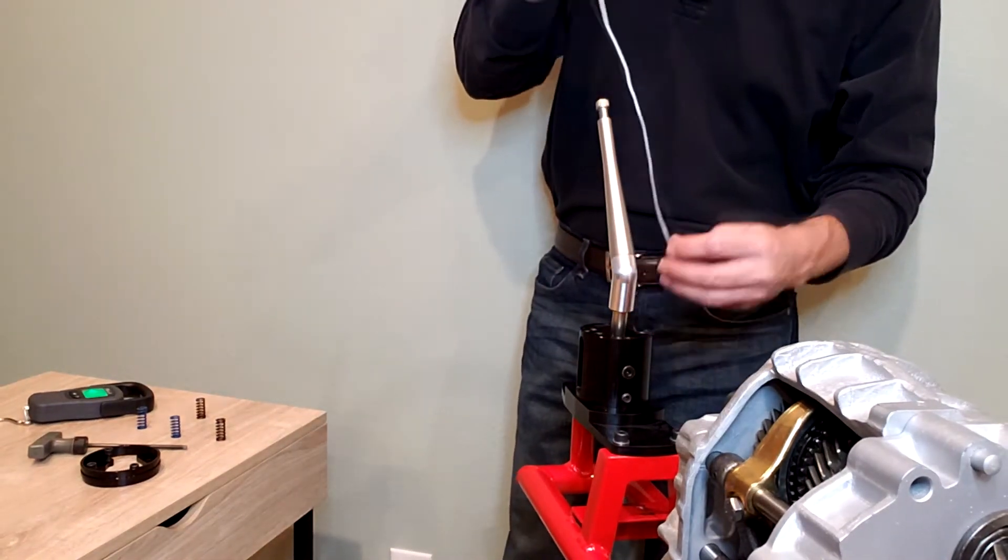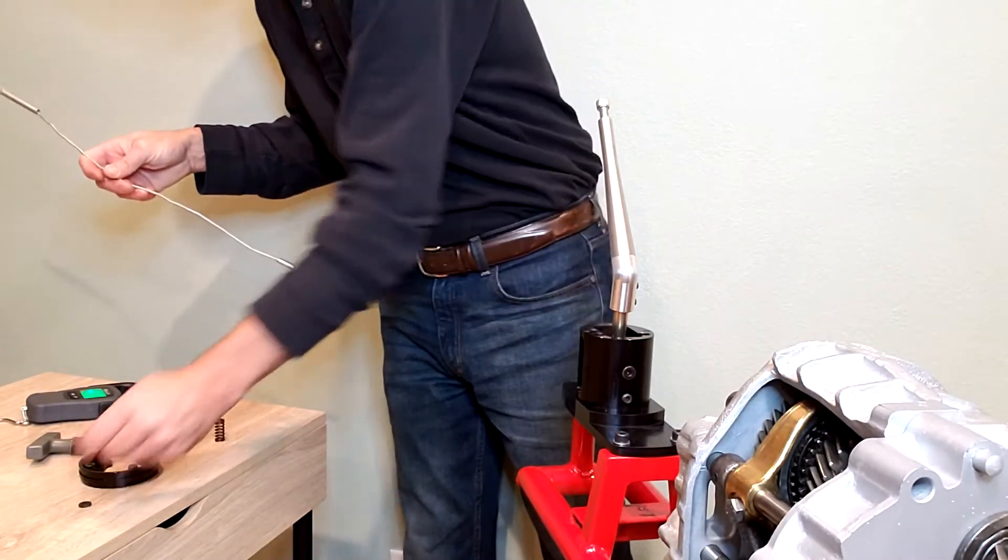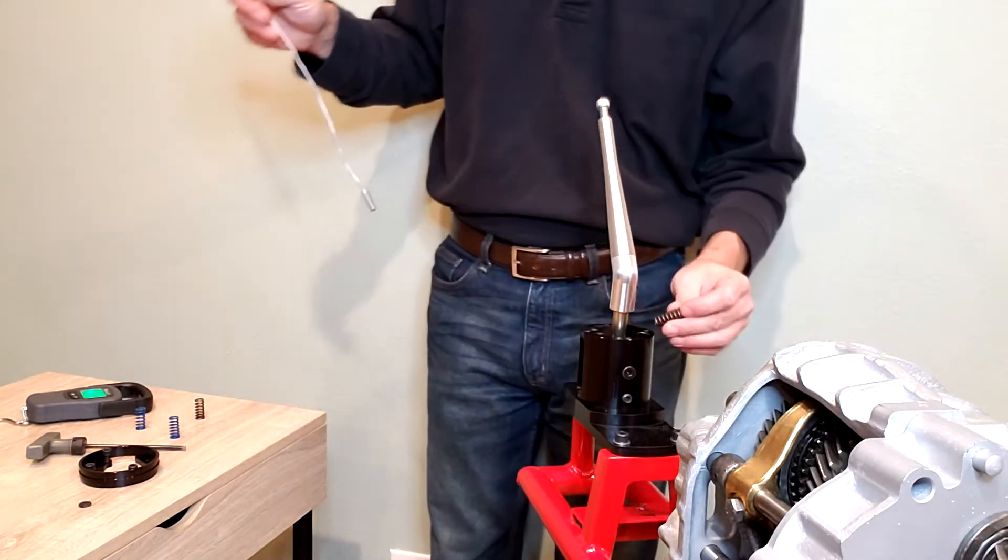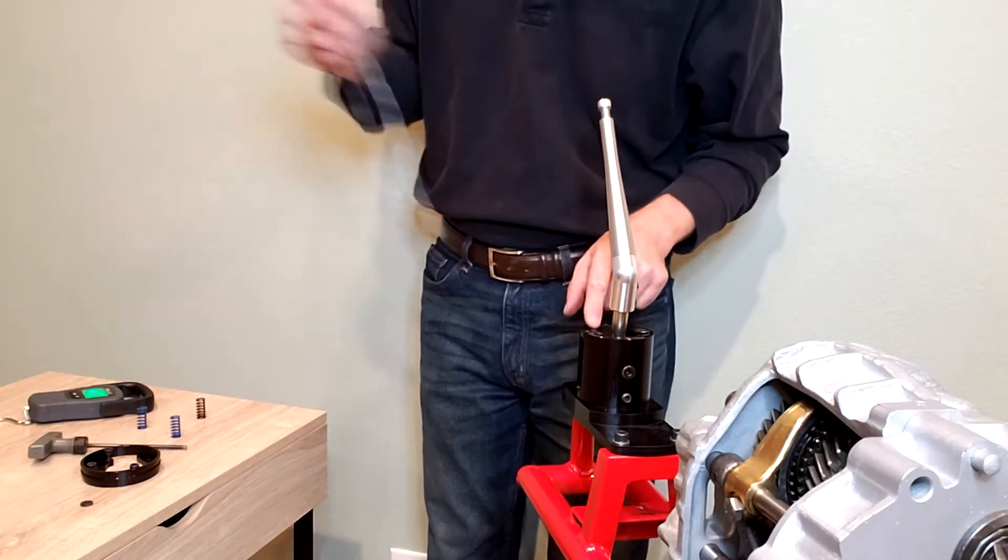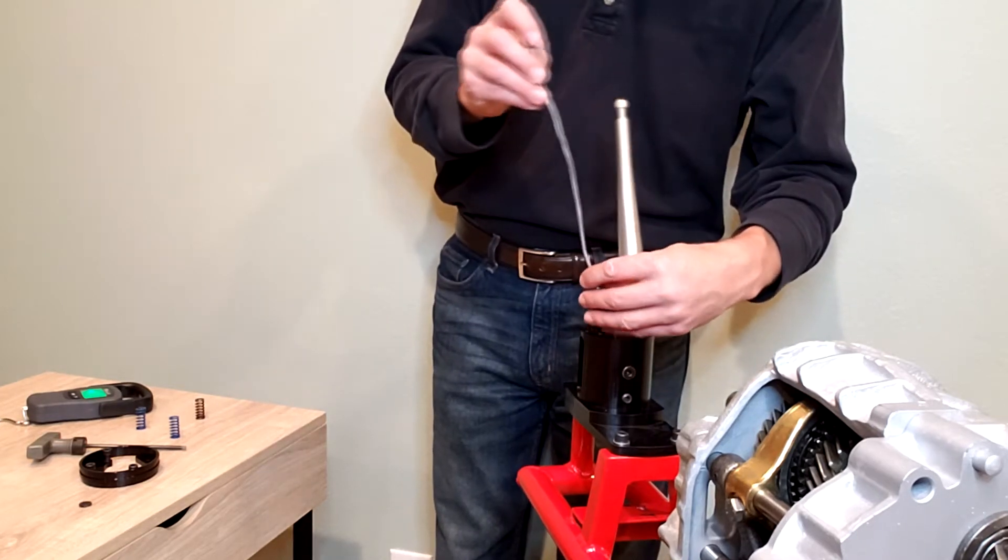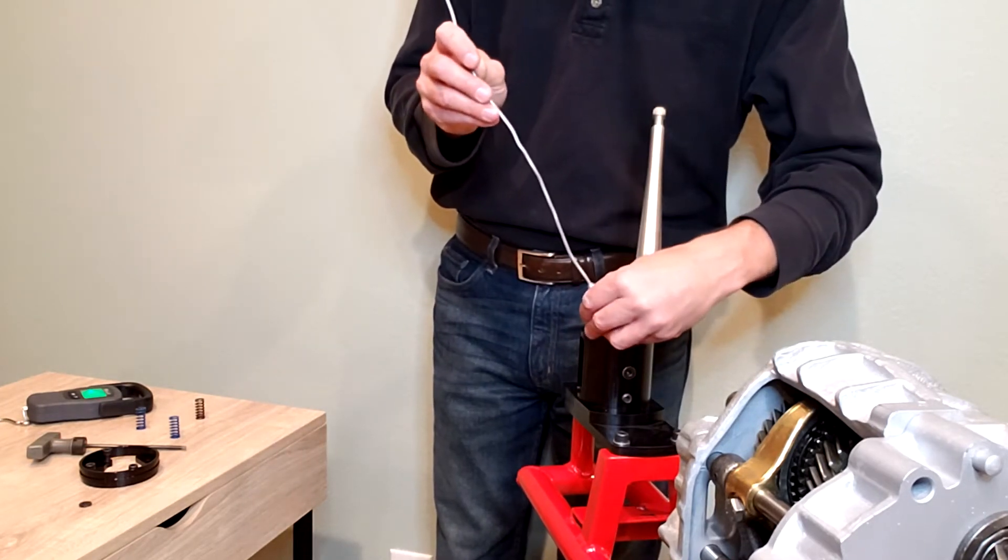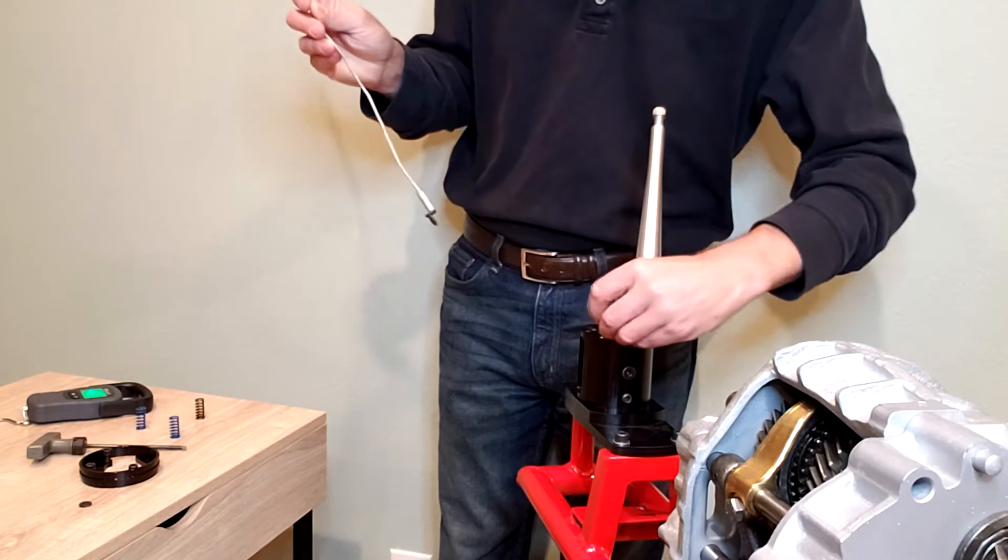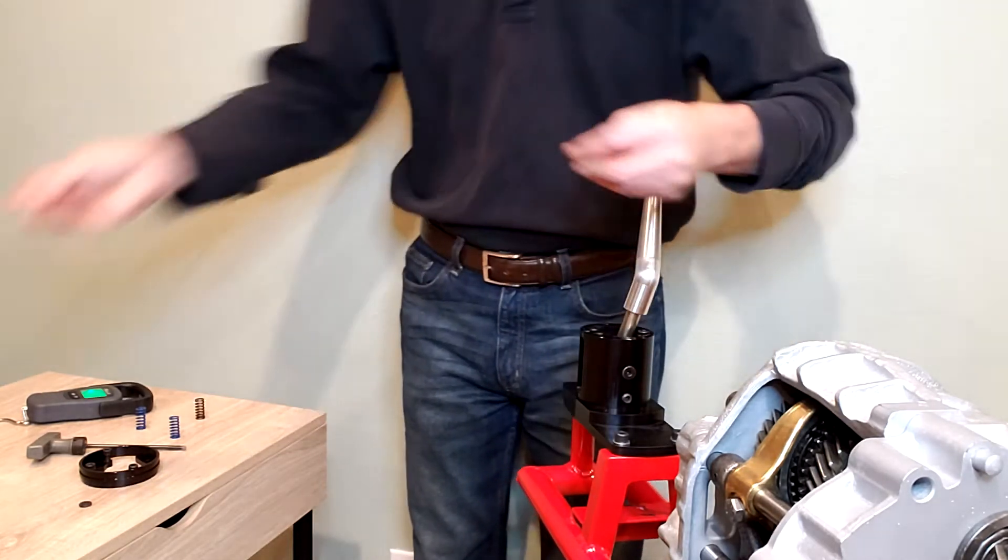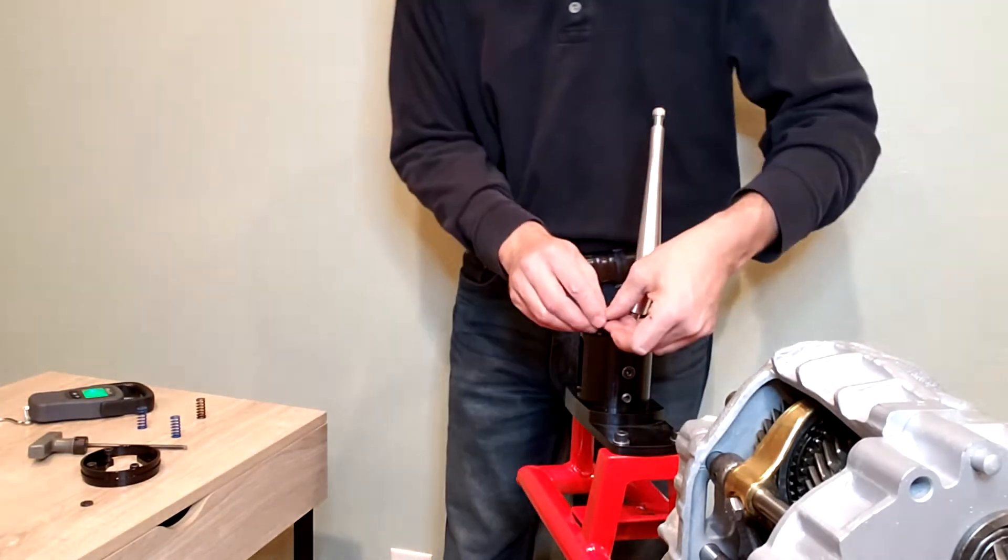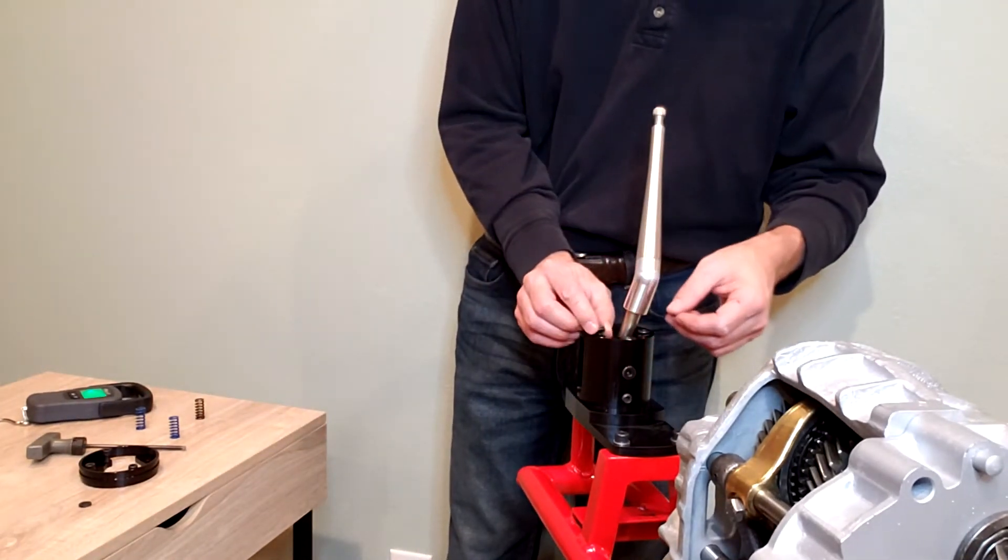Take a magnet and dish the shim out. We're going to go to gold spring with no shim and blue spring with two shims.